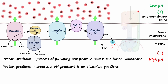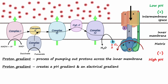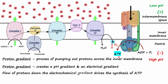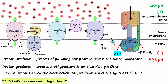The protons travel back into the mitochondrial matrix through a special enzyme called ATP synthase, also called Complex 5. The flow of protons down the electrochemical gradient into the mitochondrial matrix drives the synthesis of ATP with the help of ATP synthase, and this phenomenon is called Mitchell's chemiosmotic hypothesis.